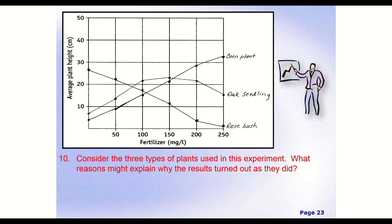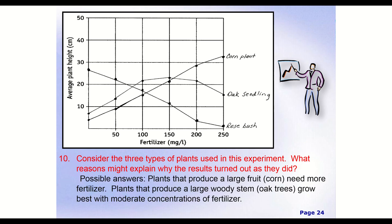Maybe if we're looking at this, we could say that plants that produce kind of a large product, some sort of fruit or a large vegetable, something that we can eat. They need more fertilizer. And again, that corn plant needing fertilizer. Whatever it is, something seems to indicate that corn definitely needs a lot more fertilizer. Oak seedlings definitely need kind of a medium amount, and rose bushes, they don't need a lot, at least of this type of fertilizer.